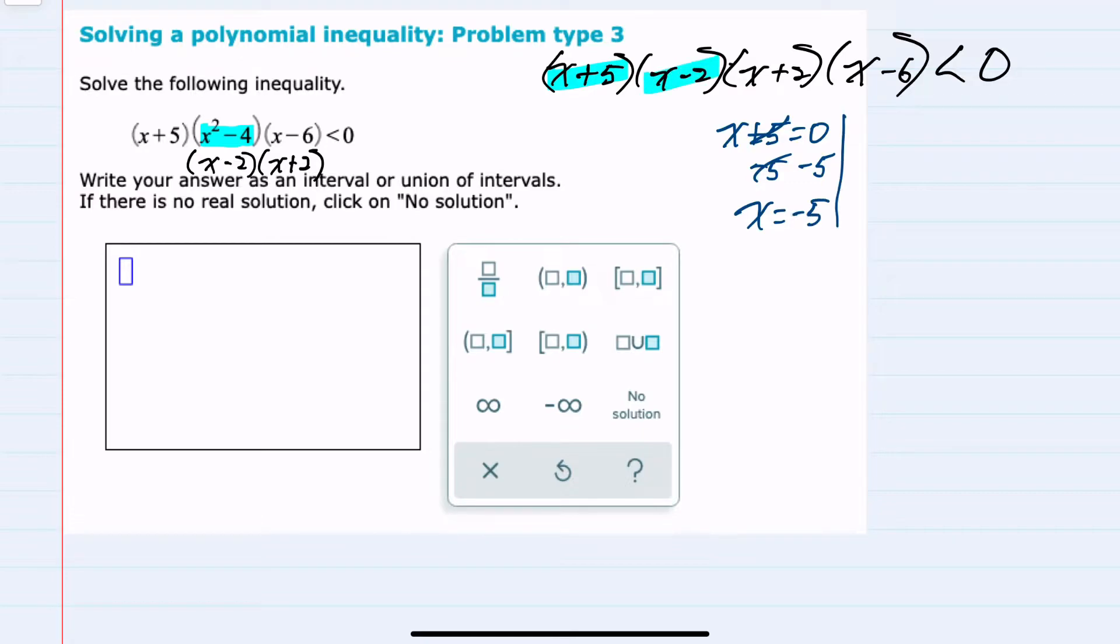For the next factor, x minus 2, the next factor is x plus 2. Solving for x, I would subtract the 2 over and have x equals negative 2.